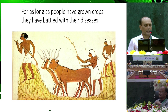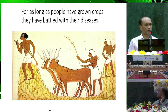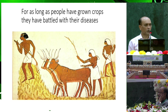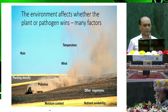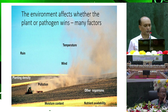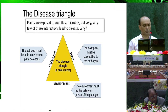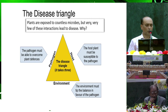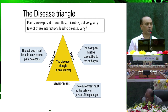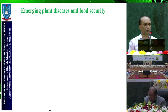Our agriculture is around 10,000 to 12,000 years old, and since the beginning, people have grown crops and battled with many diseases. The environment affects whether the plant or pathogen wins — factors like temperature, rainfall, wind, and humidity severely impact on wheat. There is a known disease triangle: pathogen, host, and environment. The environment is a crucial factor among the three major factors involved in disease development.